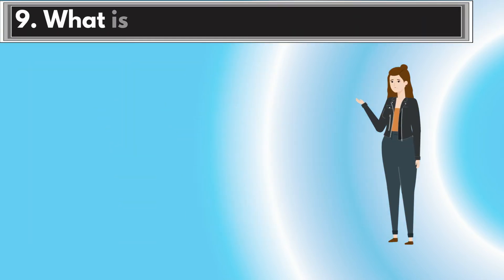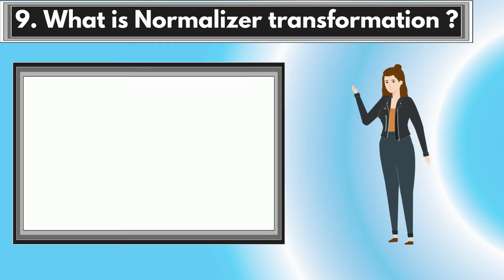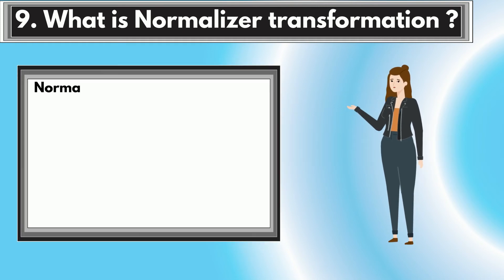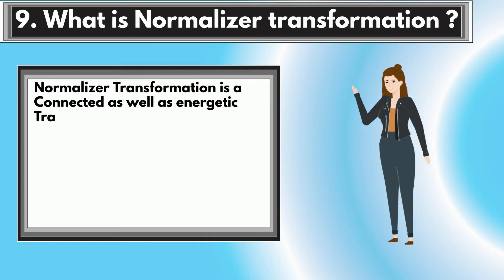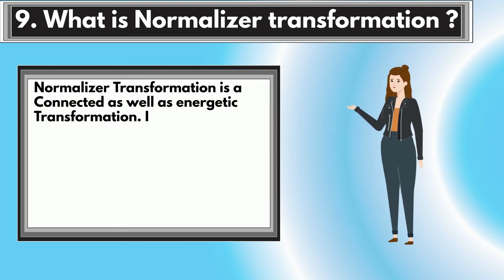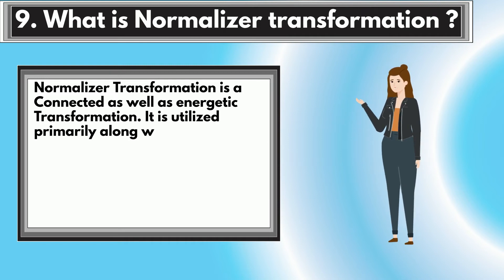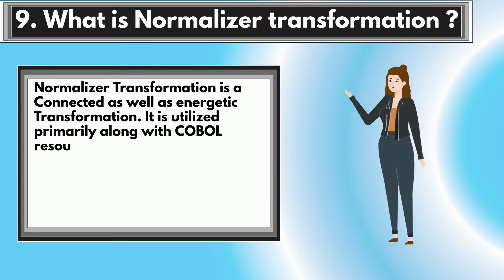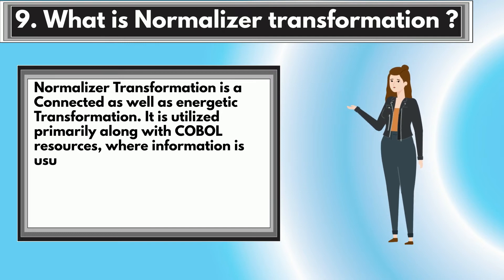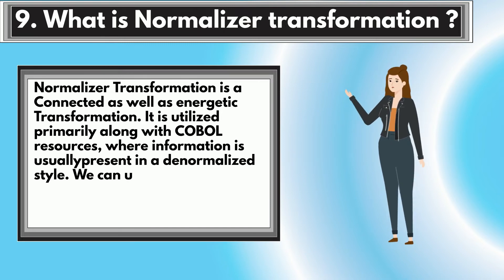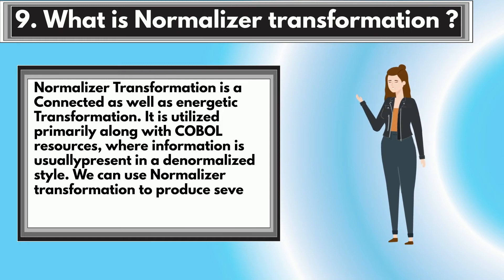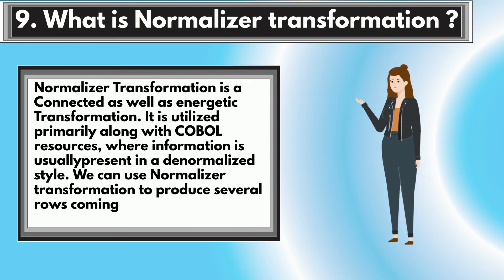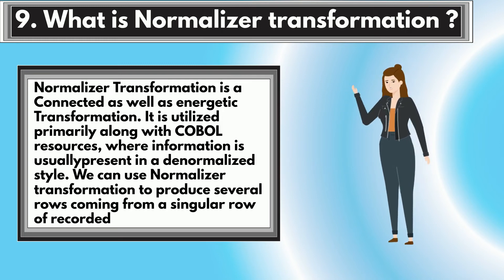Question 9: What is Normalizer Transformation? Normalizer Transformation is a connected as well as active transformation. It is utilized primarily along with COBOL resources, where information is usually present in a denormalized style. We can use Normalizer Transformation to produce several rows from a singular row of recorded data.